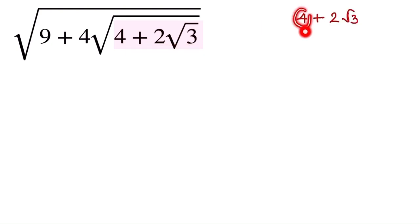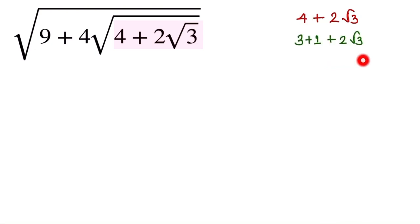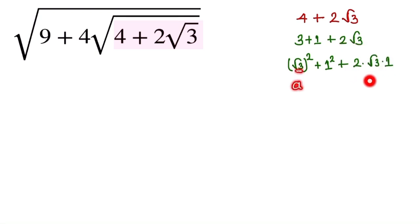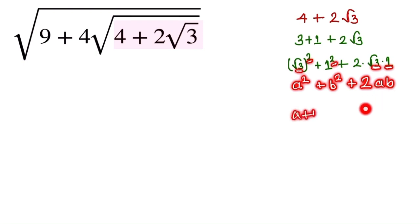We can split 4 as 3 plus 1 plus 2 root 3. We write 3 as (√3)² and 1 as 1², so the expression becomes 1² + 2·(√3)·1 + (√3)², which matches the identity (a + b)² with a = √3 and b = 1. So 4 + 2√3 = (√3 + 1)².